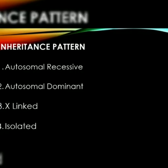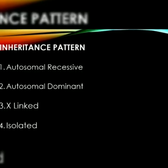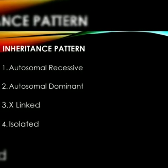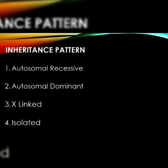Next, we will talk about the inheritance pattern. There are four types: autosomal recessive, autosomal dominant, X-linked, and isolated. Autosomal recessive is less common and its prognosis is intermediate. Autosomal dominant is common and its prognosis is best. X-linked is rare and its prognosis is worst. Isolated, meaning without family history, is common.